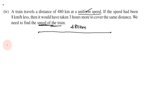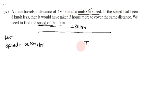So, what we need to do is let the speed of the train be x km per hour. If the speed had been 8 km per hour less, the new speed would be x minus 8 km per hour.